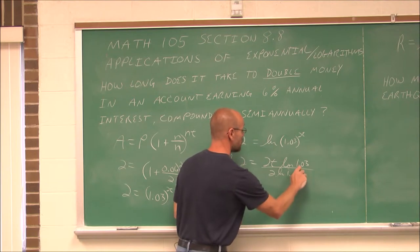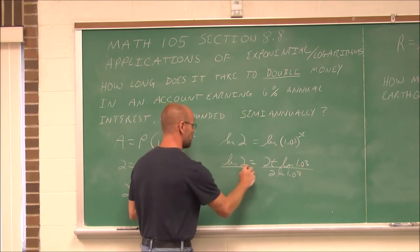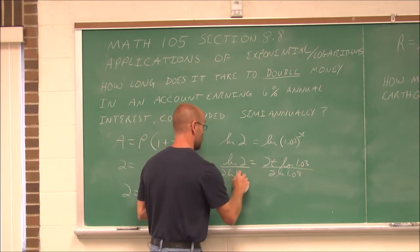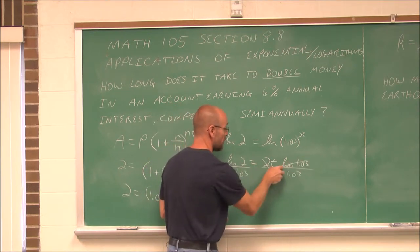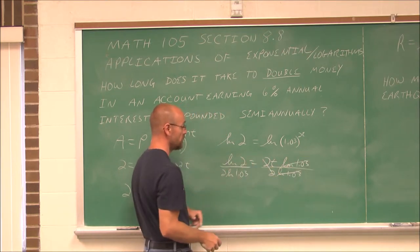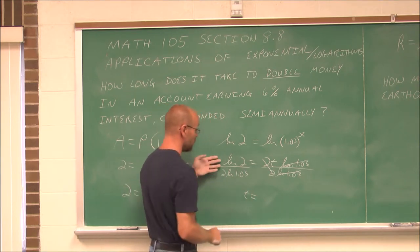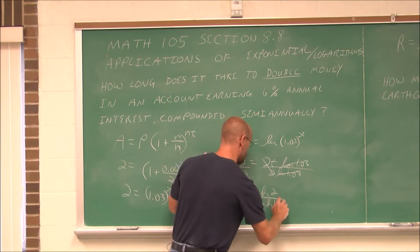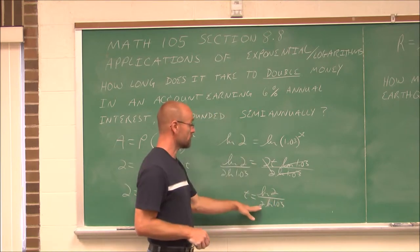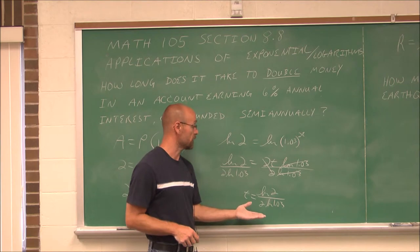What I do to one side, I need to do to the other. And this reduces to 1. I have 1t. So t equals this value, ln of 2 over 2 ln of 1.03.